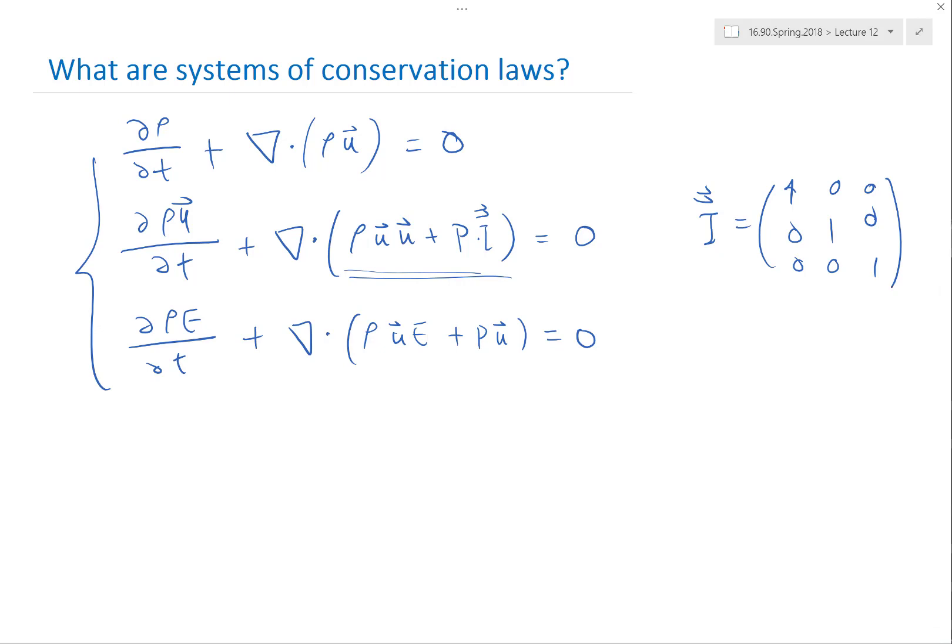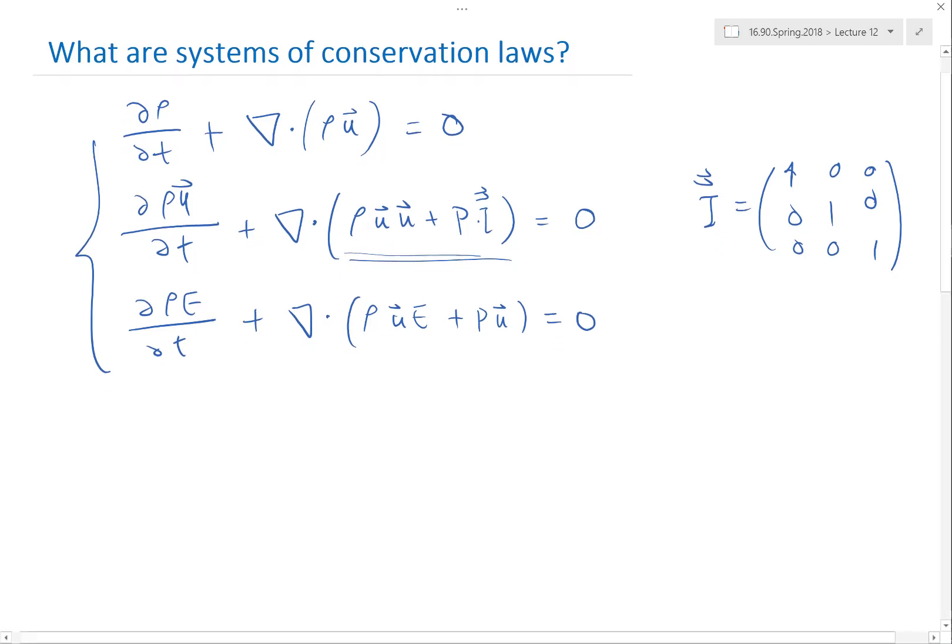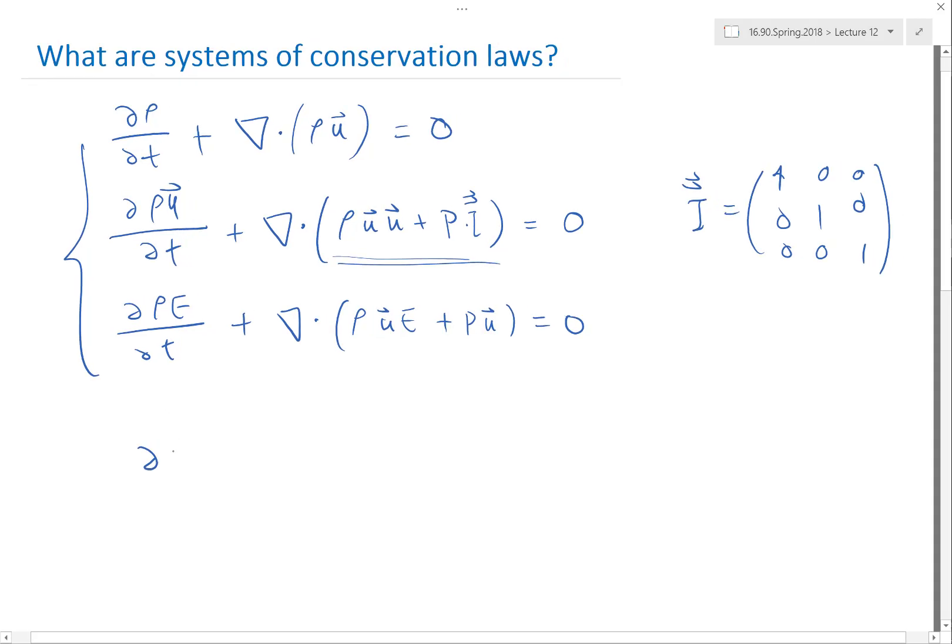A lot of conservation laws are like that. If you write this down in the conserved form, you usually have something like ∂u/∂t as a vector plus the divergence of flux as a tensor, which is a function of u, equal to zero.